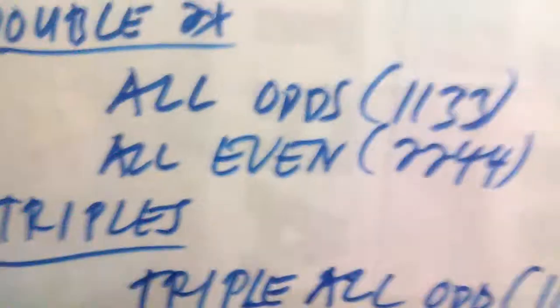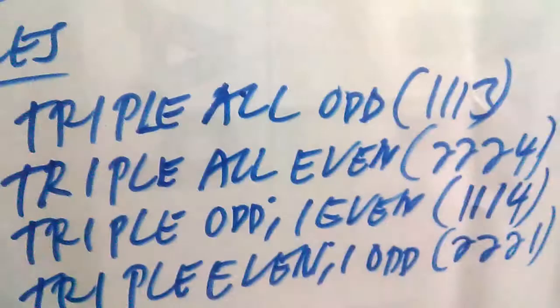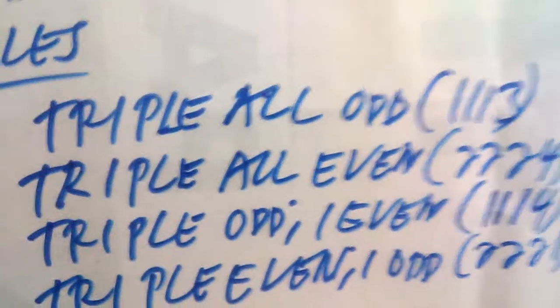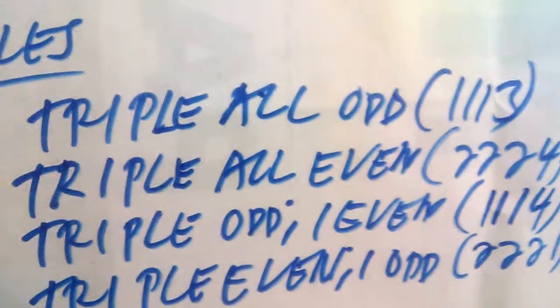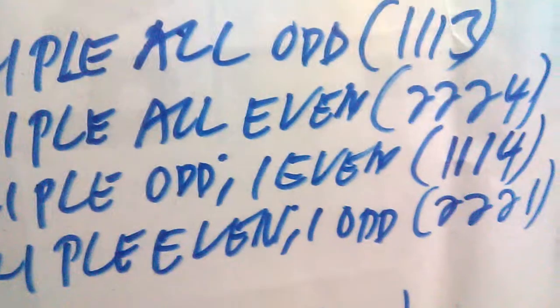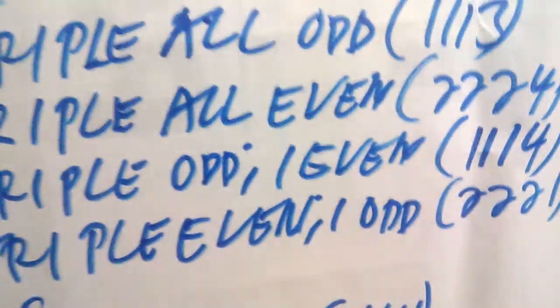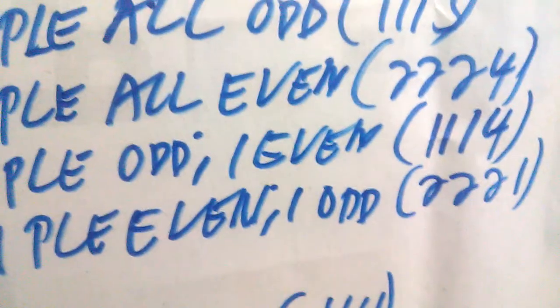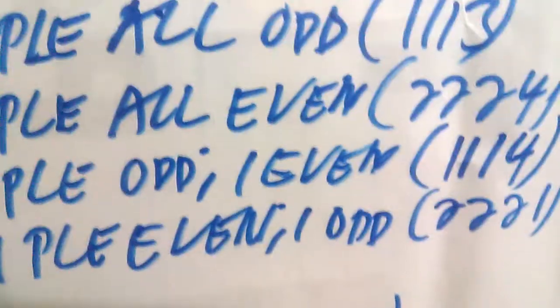For the double-double, we have: all-odd — example 1133; and all-even — example 2244. For the triples, we have: triple-all-odd — example 1113; triple-all-even — example 2224; triple-odd, one-even — example 1114; and triple-even, one-odd — example 2221.